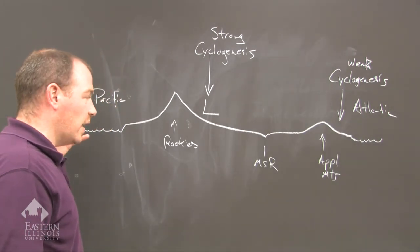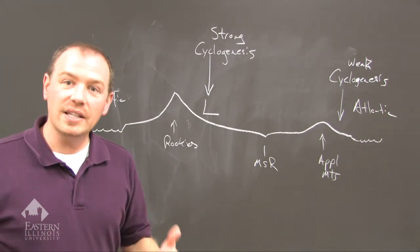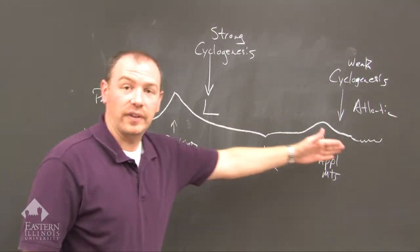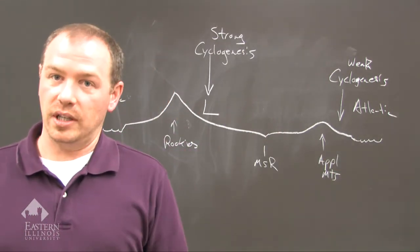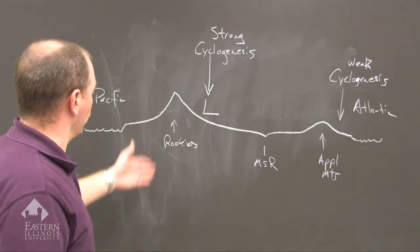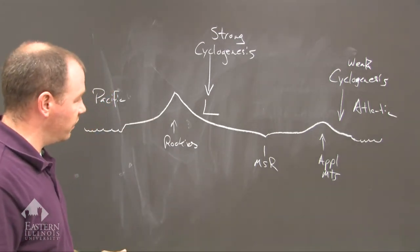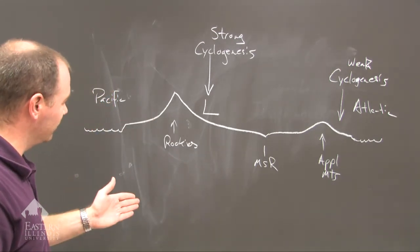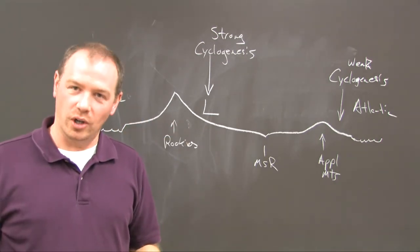So in essence, the development of the mid-latitude cyclone is based on the topography. If we did not have these mountains here in the United States at all, then we could expect that cyclogenesis would not occur because we don't have the changes in elevation. The changes in elevation cause cyclogenesis to occur.